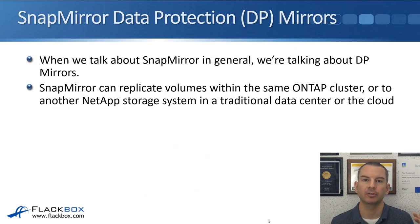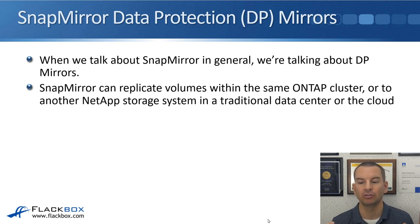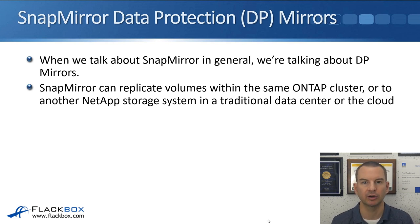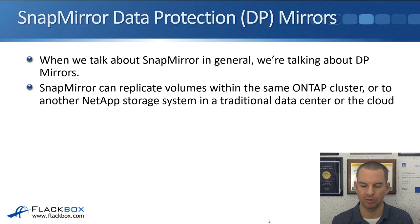Next we have SnapMirror data protection DP mirrors. When we talk about SnapMirror in general, we're talking about these DP mirrors. SnapMirror can replicate volumes within the same ONTAP cluster or to another NetApp storage system in a traditional data center or the cloud. DP mirrors can be used to replicate within the same cluster, but far more often the replication will be going from one cluster to another. With the NetApp Data Fabric, it's not just ONTAP-to-ONTAP replication — you can replicate between different NetApp storage systems. Check out the NetApp Data Fabric lecture in Section 2 for more details.